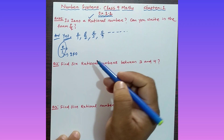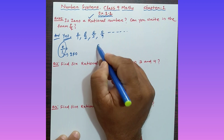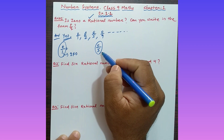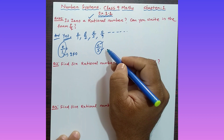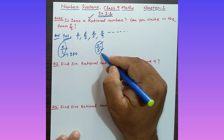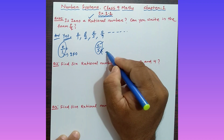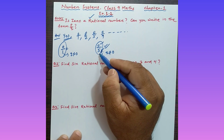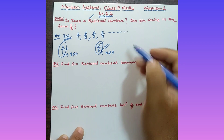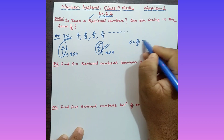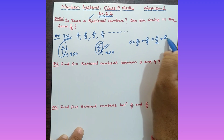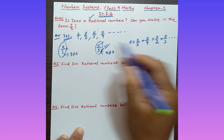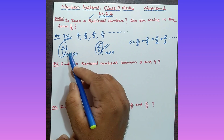For example, 0/5 is also a rational number. Here p is zero and q is five. Both p and q are integers, and the denominator is five which is not equal to zero — condition satisfied. So zero can be written as 0/5, 0/9, 0/2, 0/3, and so on. That is why zero is a rational number.